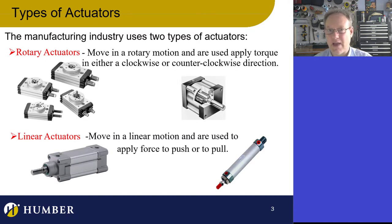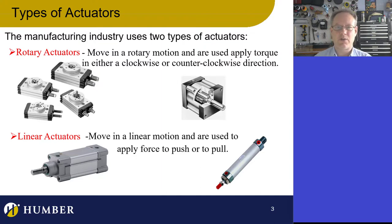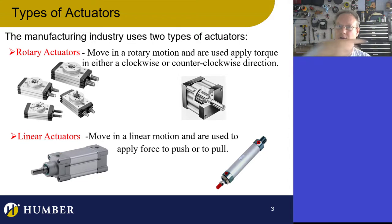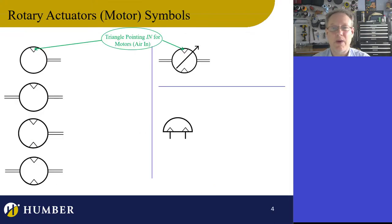We're going to focus on linear actuators, and we'll get into rotary actuators a little bit later in this course when we apply them in a project. Essentially, there are two categories of pneumatic actuators: rotary actuators, which go in circles or back and forth, and linear actuators that move in a linear fashion. There are all different types within both categories.